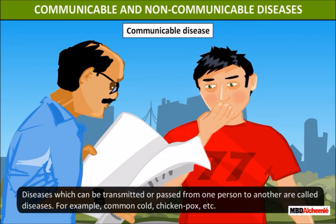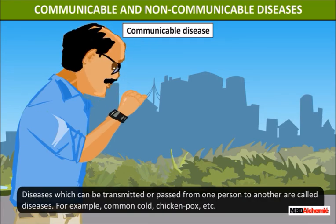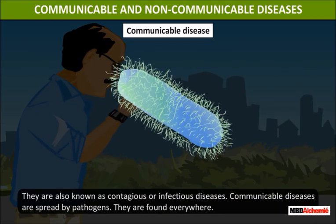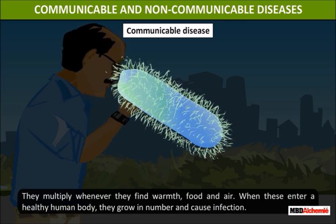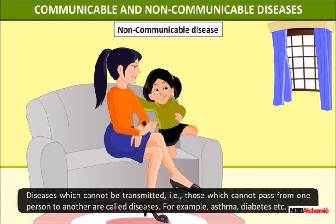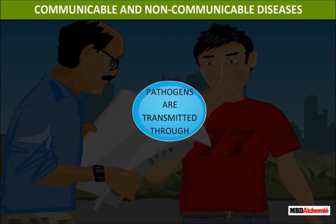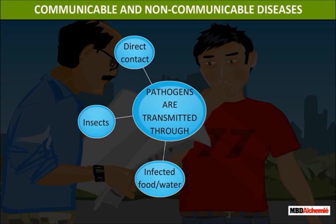Diseases which can be transmitted or passed from one person to another are called communicable diseases, for example common cold and chickenpox. They are also known as contagious or infectious diseases. Communicable diseases are spread by pathogens. They multiply whenever they find warmth, food, and air. Diseases which cannot be transmitted from one person to another are called non-communicable diseases, for example asthma and diabetes. Pathogens are transmitted through direct contact, insects, infected food or water, carriers, and air.